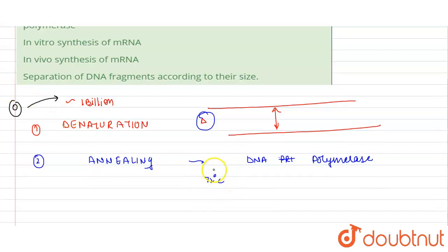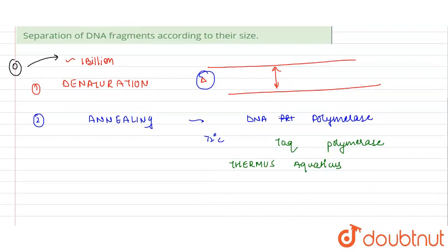At this temperature, any DNA polymerase will get denatured and destroyed, so we use a special type of DNA polymerase. That is Taq polymerase. From where is this Taq polymerase being isolated? It is being isolated from Thermus aquaticus. This is the bacteria from where this DNA polymerase is being isolated.